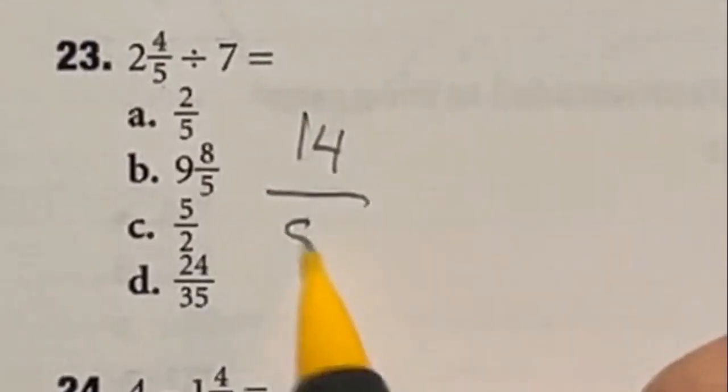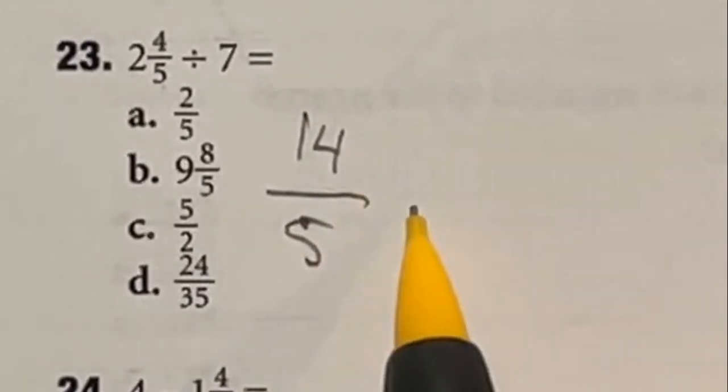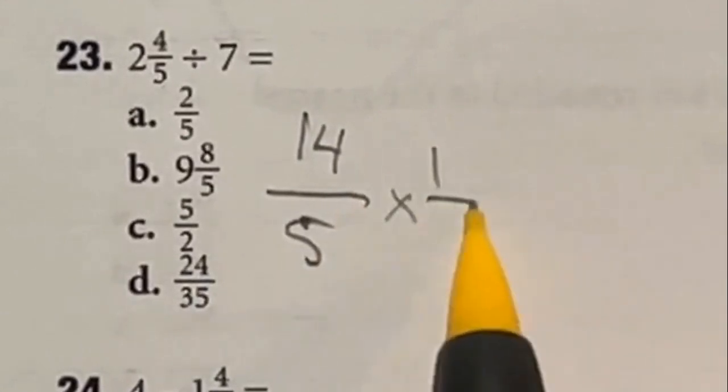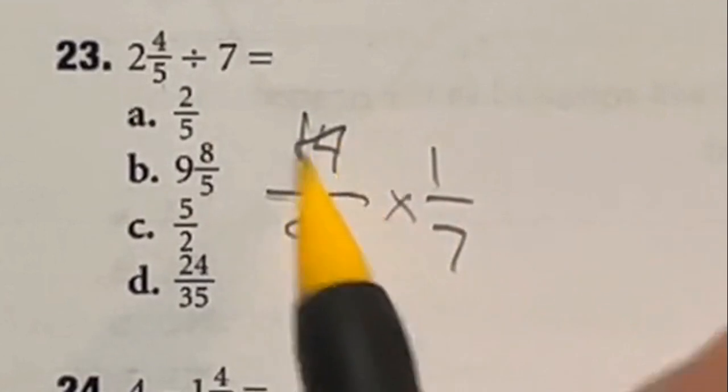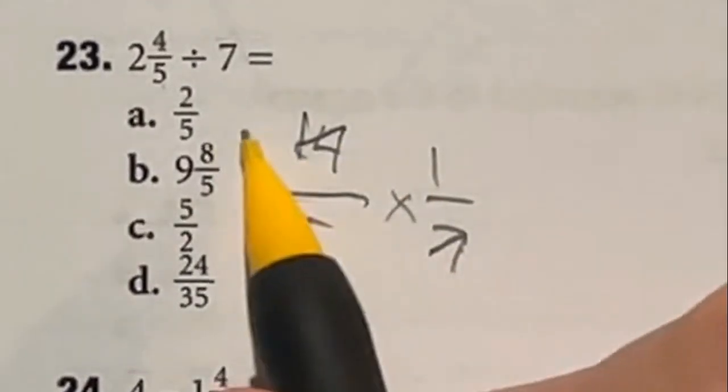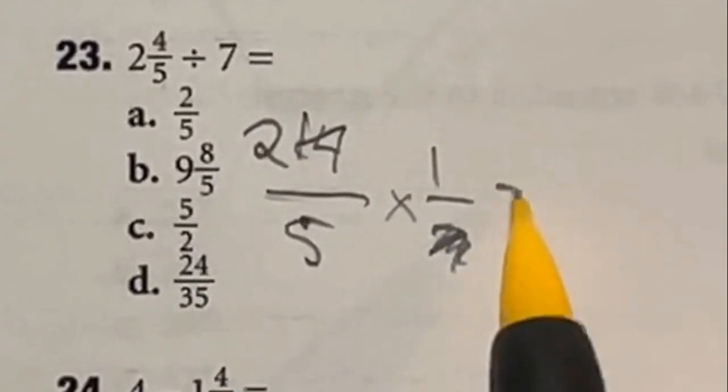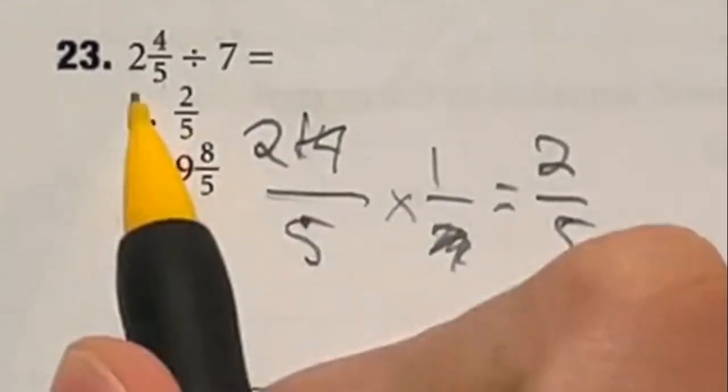So here's some more fraction work here. We got two and four fifths divided by seven and in this case the first thing I'm going to do is convert this to an improper fraction so then we can actually do the division. So how do I do that? Well I take the whole number multiply it by the bottom and add it to the top. So two times five is 10 plus four is 14 over that five. Then we're going to divide by seven. Lots of different ways you can do this as multiplying by one over seven would be the same thing as dividing by doing the reciprocal or you can just move it to the bottom knowing that you're dividing by it. Either way this 14 and seven are going to cancel out because 14 divided by seven is two and it gets rid of the term down there leaving our final answer as two over five which is A.